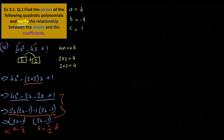So 2s divided by 1. We have to look at this: minus 1 is common. Minus 1 multiplied by minus 2s gives positive 2s.